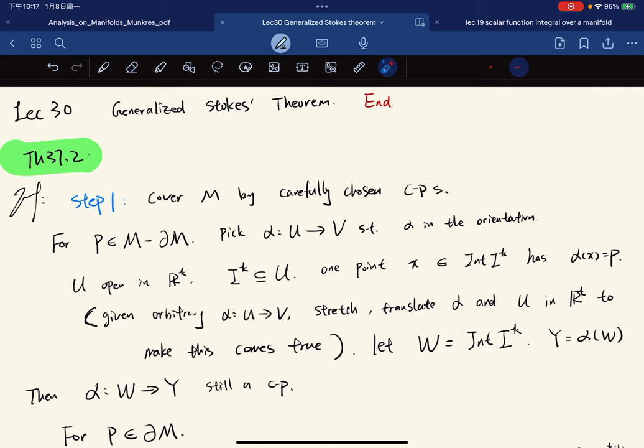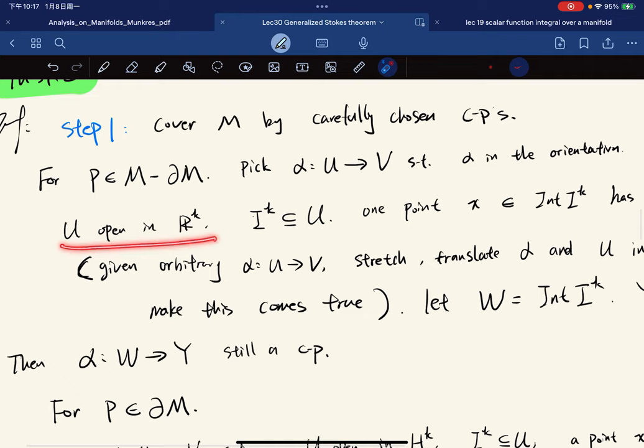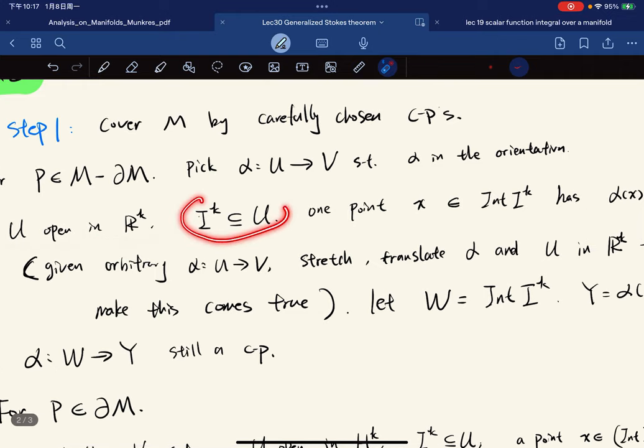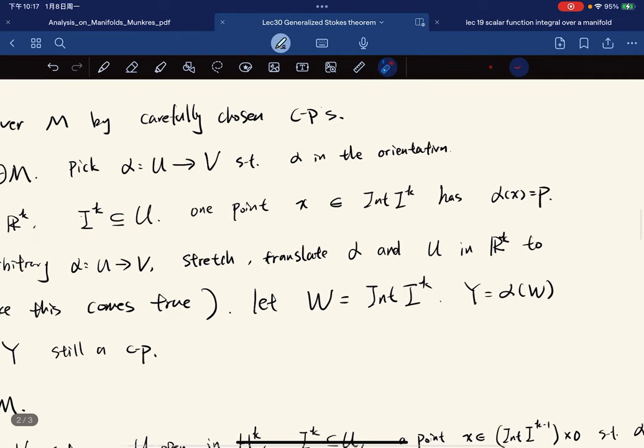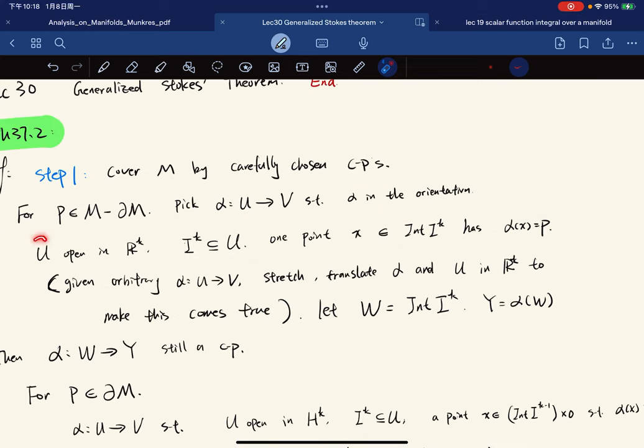Step 1, we just cover M by carefully chosen coordinate patches. For p an interior point, you pick a coordinate patch such that alpha is in the given orientation, and U open in R^k, and one point in the interior has alpha(x) equal to p. So how can we make this choice?